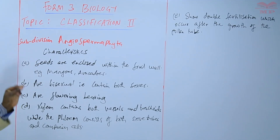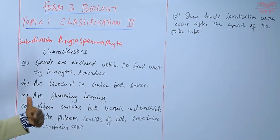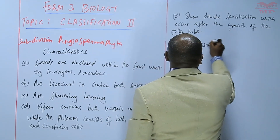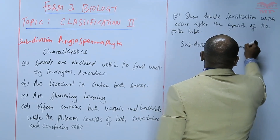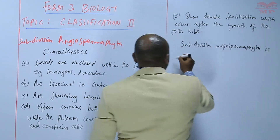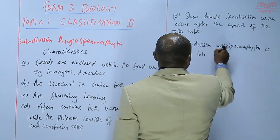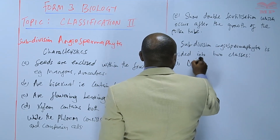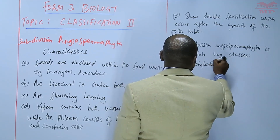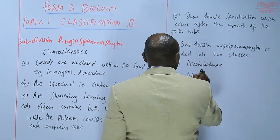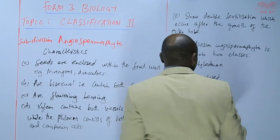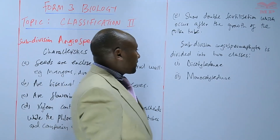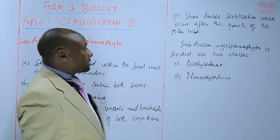The subdivision Angiospermophyta is divided into two classes — we have class Dicotyledonae and class Monocotyledonae. So that is what we simply call the monocots and the dicots, but in terms of taxonomy the classes are Dicotyledonae and Monocotyledonae.